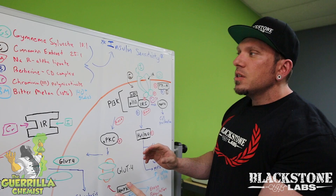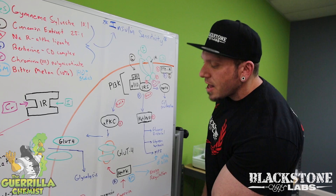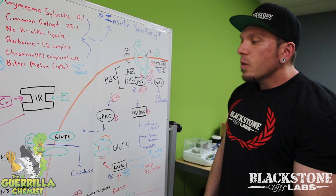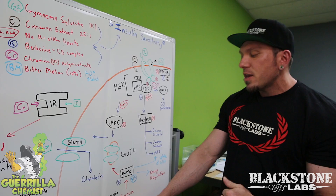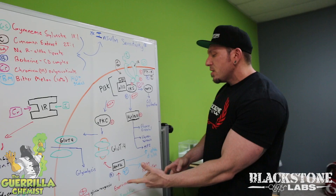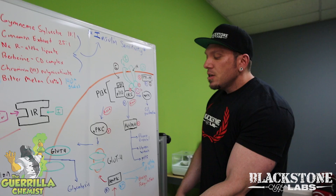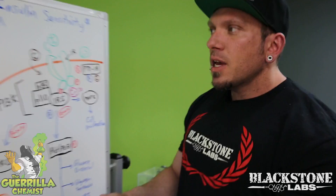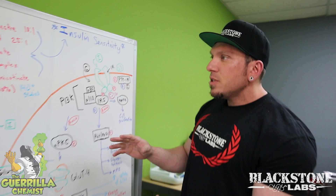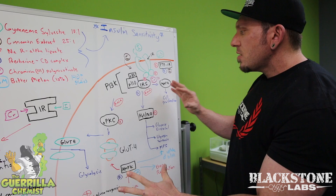Bitter melon also activates PPAR-alpha and PPAR-gamma. We're still figuring out exactly how they work, but new diabetic medications are targeting these enzymes because they're responsible for energy regulation. Not only is bitter melon helping control energy regulation through AMPK, but also through these two enzymes. The point of all this is that if we can maximize glucose and protein getting inside our cells while minimizing lipid storage and increasing lipid metabolism — that's a win all around. When putting this product together, I tried to maximize all the possibilities and pathways to utilize insulin to your advantage.